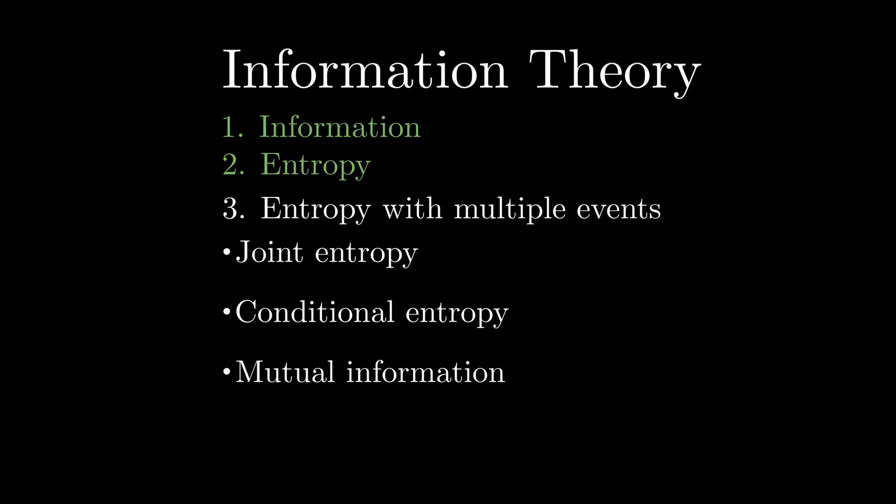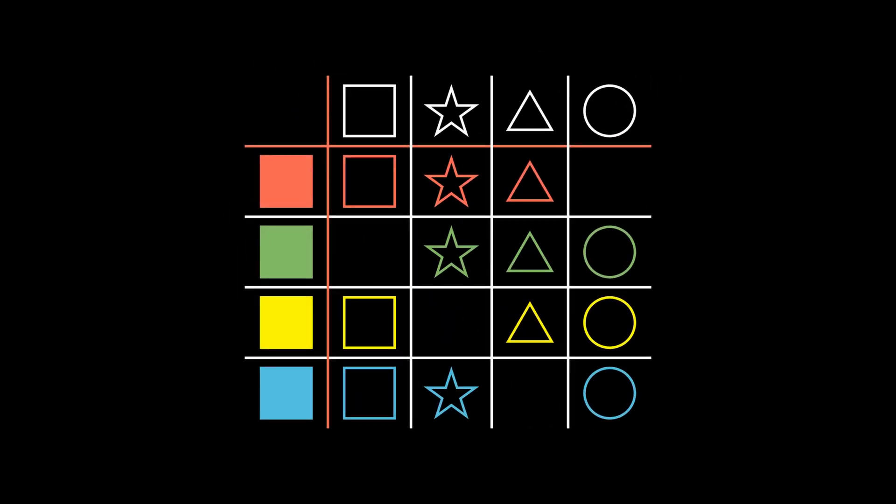Remember our example with picking a ball from a set of balls of different colors that we introduced in the previous episode? We can expand on it, where now instead of just balls, there are different shapes. You can think of an outcome of picking from our bag as two events. One is picking a specific color and the other one is picking a specific shape.